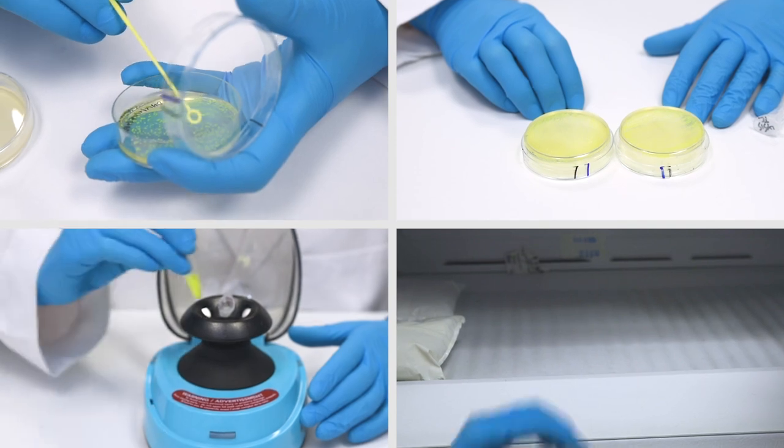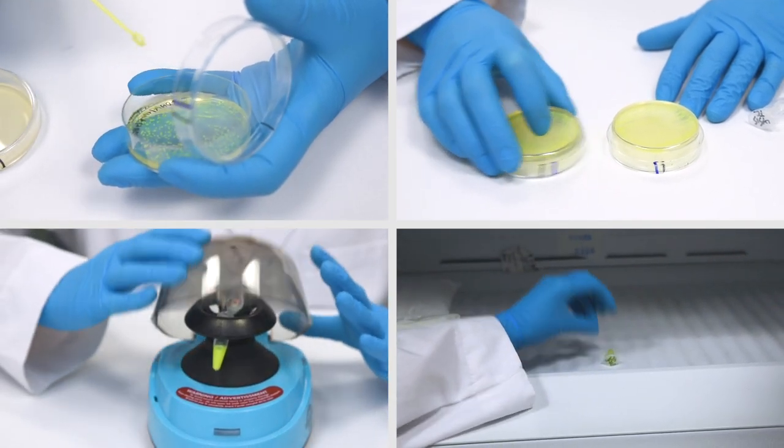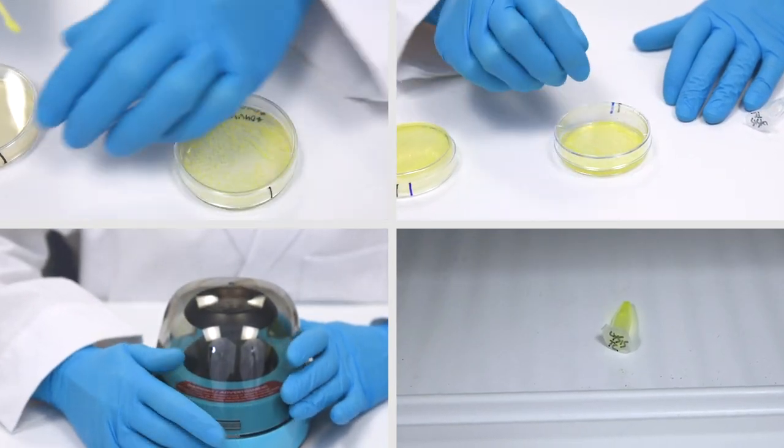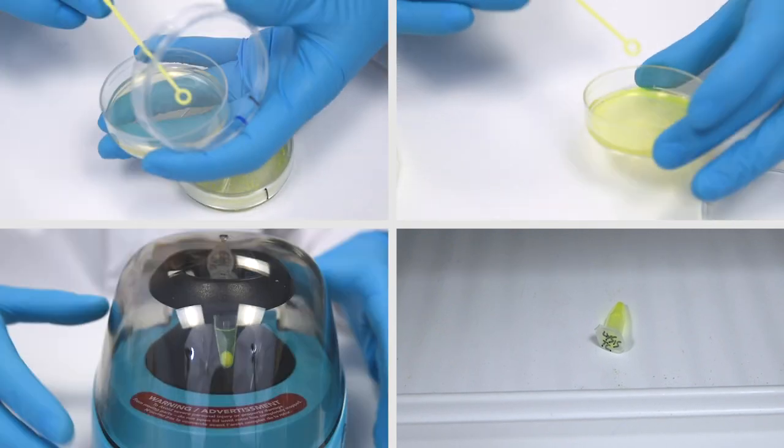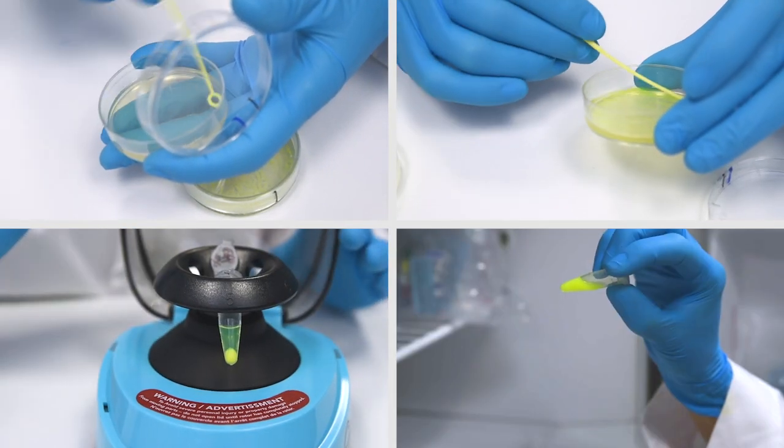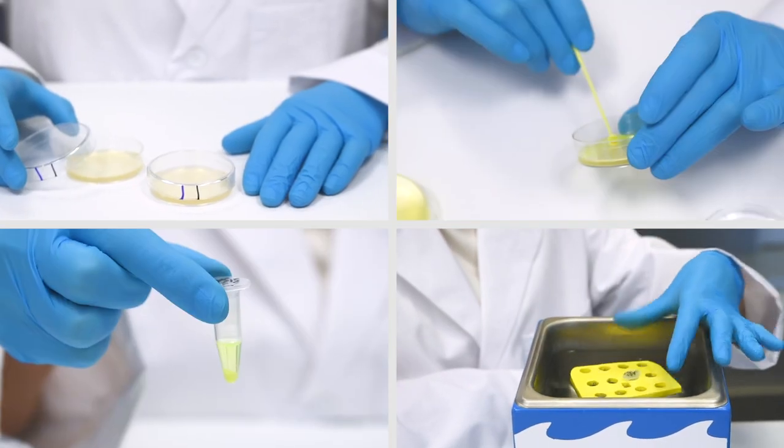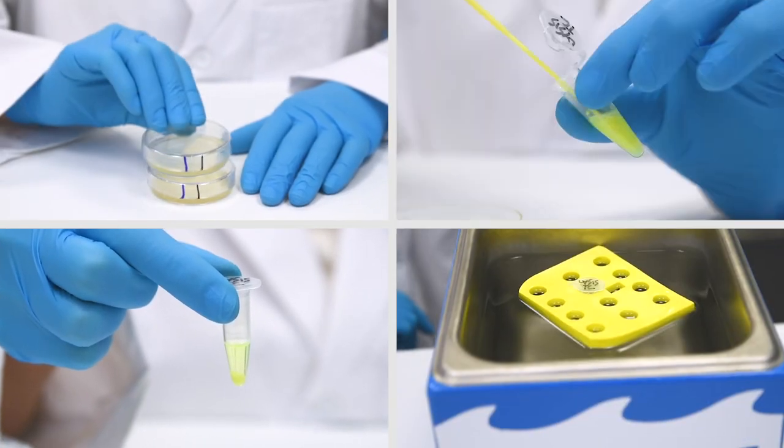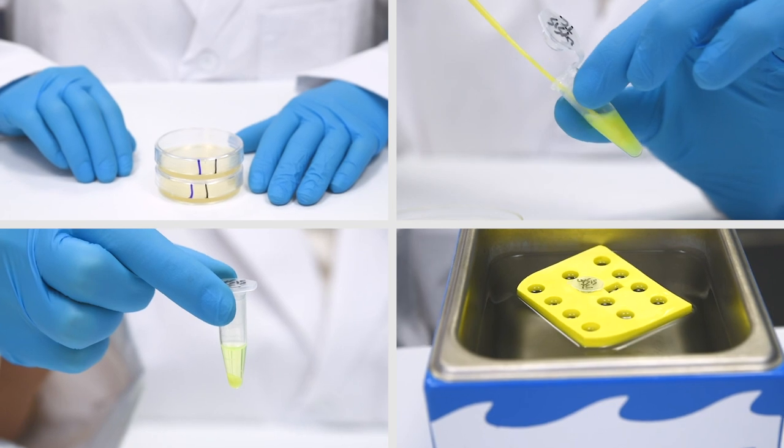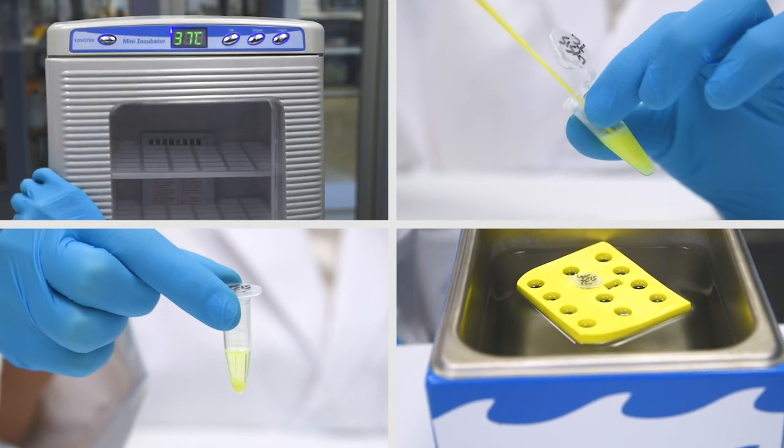In Module 2, you will select GFP expressing colonies from the transformation plates created in Module 1. The bacteria will be grown overnight on LB agar plates containing ampicillin and IPTG. Next, the bacteria will be collected and lysed to release the GFP for later purification.